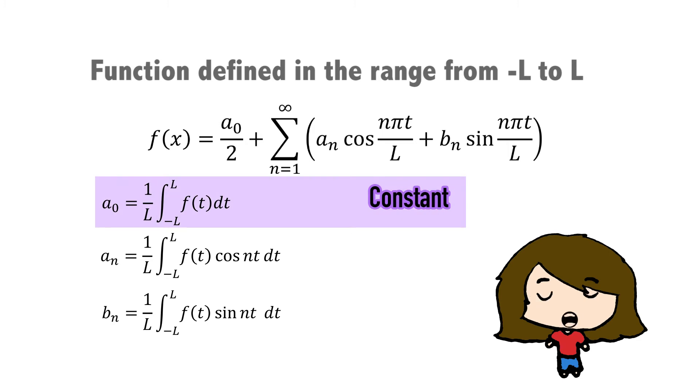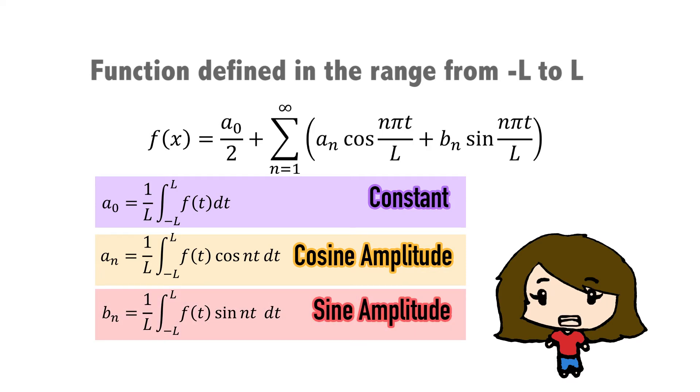a0 represents the constant, aN represents cosine amplitude, and bN represents sine amplitude.